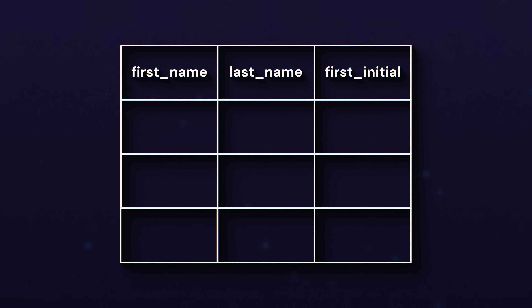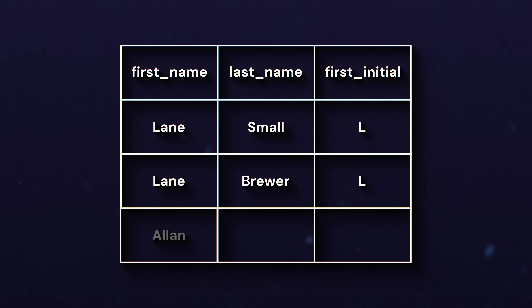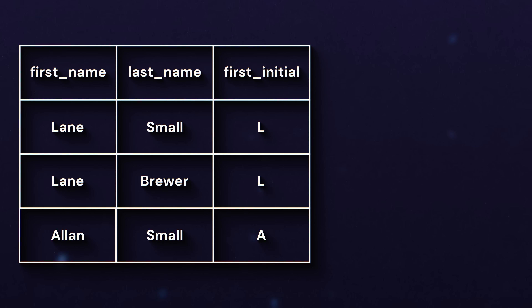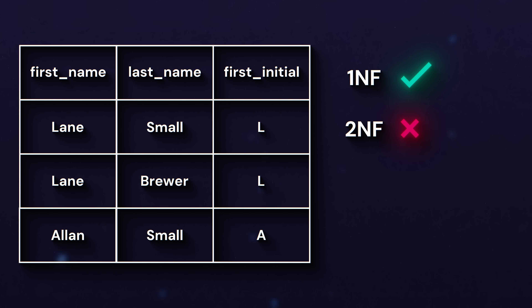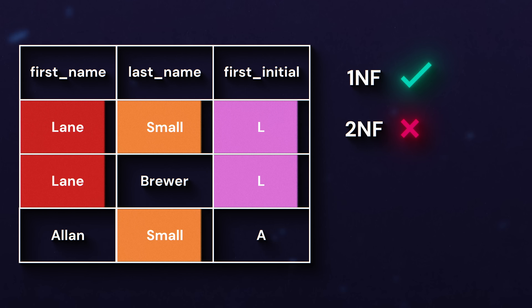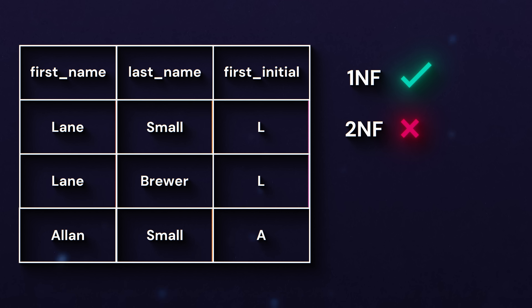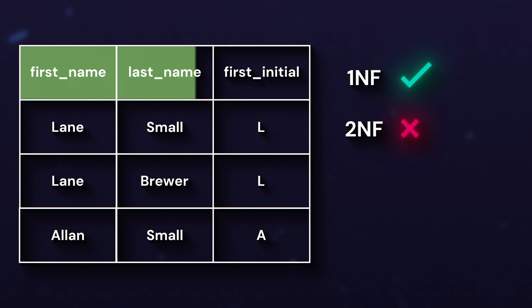Say we have a table with three columns: first name, last name, and first initial — with rows Lane Small (L), Lane Brewer (L), and Allen Small (A). This table technically follows first normal form — no duplicate rows, no nested tables — but it doesn't follow second normal form's rules. None of the columns can be a primary key by themselves because none have completely unique values, but we can choose a pair that creates a unique combination, like first name and last name.